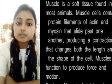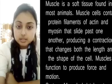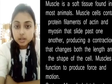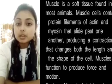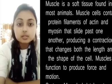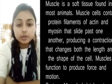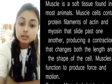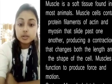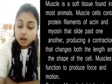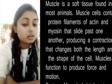Muscles are soft tissues found in most animals. They contain protein and can be both voluntary and involuntary. Voluntary muscles are those whose movement is under our control, for example our arms and legs.